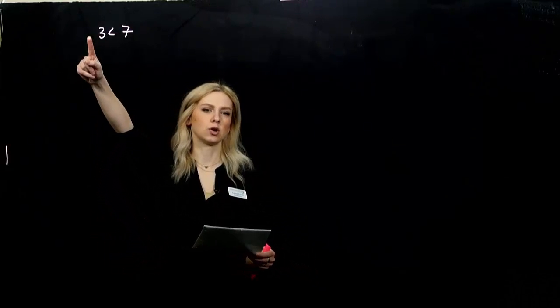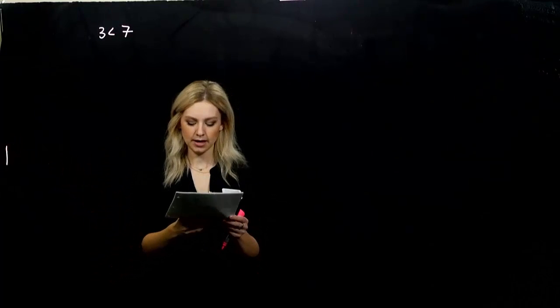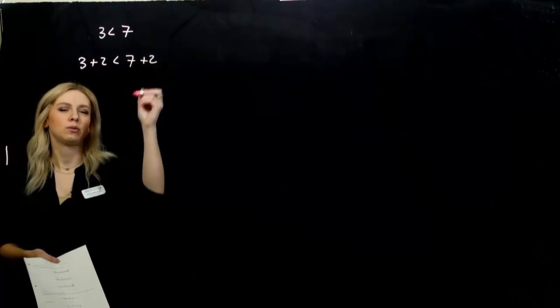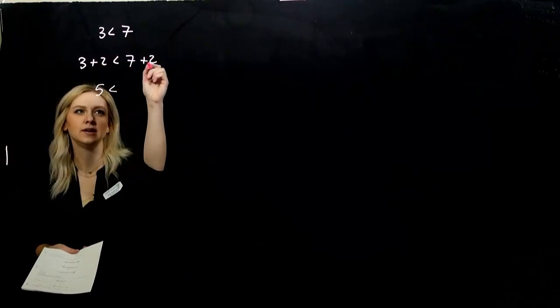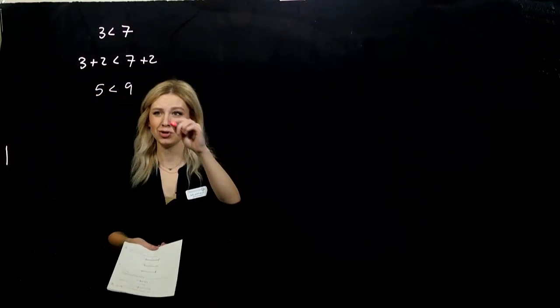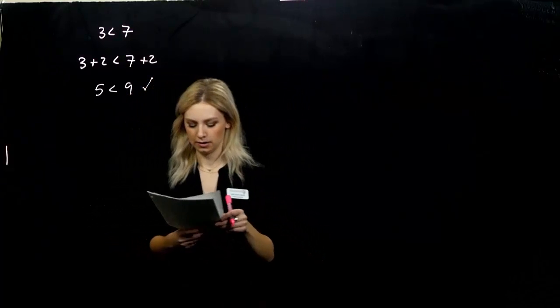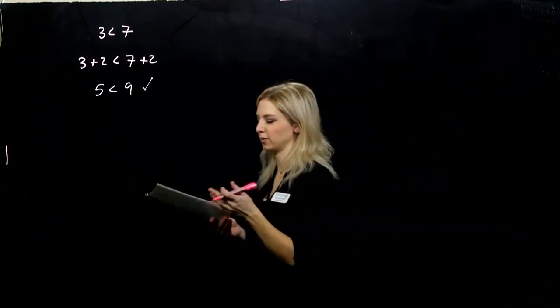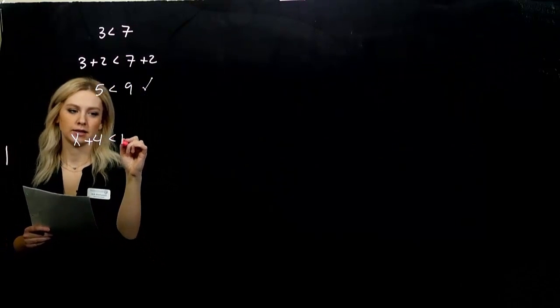So we're just going to start looking at this inequality. Is it true? Is 3 less than 7? Yes. And if I add something, the same exact thing to both sides, is that inequality still going to hold true? So let's just say I add 2 to one side, I add 2 to the other. Is this still true? So 5 is less than 9. Still true.